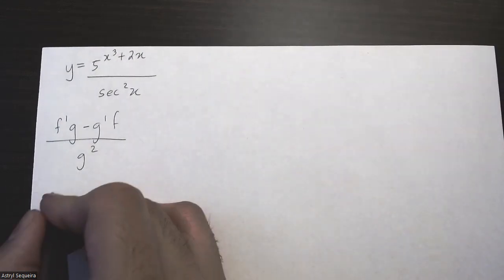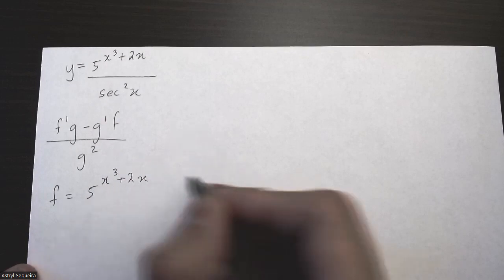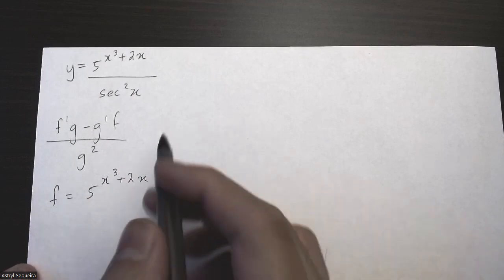f is simply the numerator, and g is the denominator.